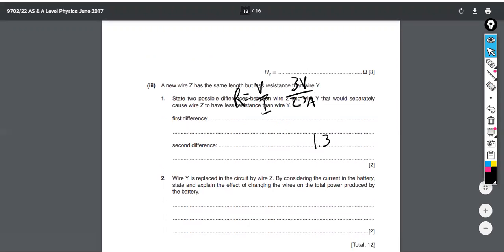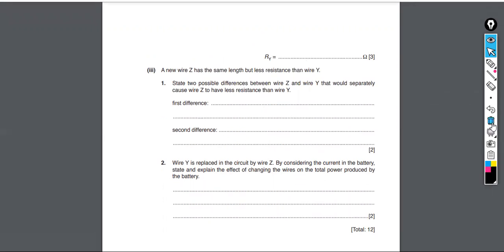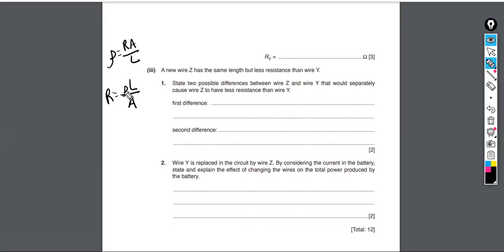A new wire Z has the same length but less resistance than wire Y. Two possible differences that could cause this: using the resistivity equation R = ρL/A, with the same length fixed, we can either lower the resistivity — choosing a metal with lower resistivity — or increase the cross-sectional area, since area is in the denominator.